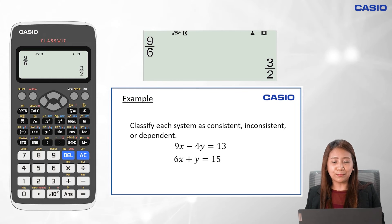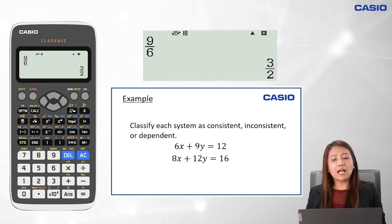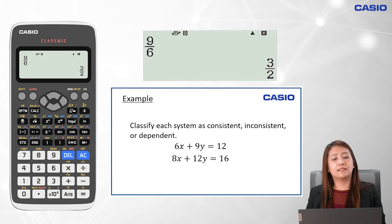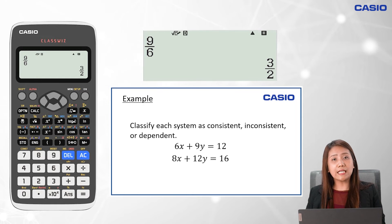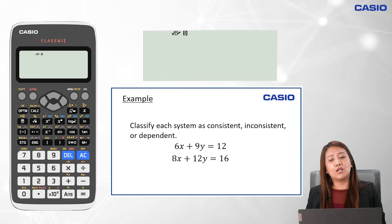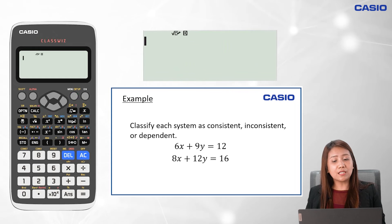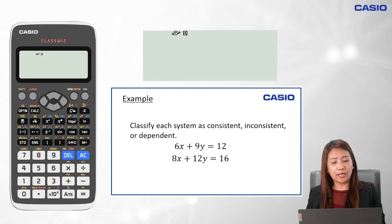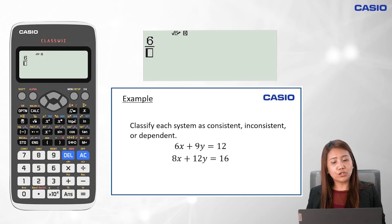Let's go to another example. The same task — we're asked to classify each system as consistent, inconsistent, or dependent. Again, let's get the ratio of the coefficient of x, the coefficient of y, and the constant terms. We go to Menu 1. To identify whether they have the same value in simplest form, let's key in the ratio for x: we key in 6, fraction, and then 8.